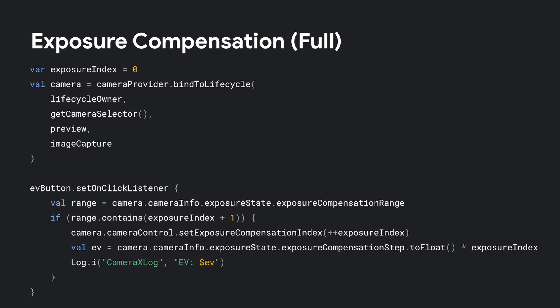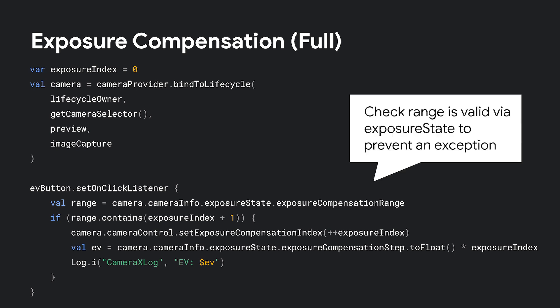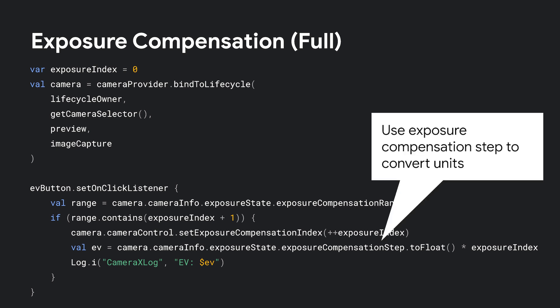There are a few other details to mention. First, we check our setting will be in a valid range by getting the exposure compensation range from the exposure state provided by camera info. This prevents a possible exception. Finally, if we'd like to obtain the EV value — say to display — we can get the exposure compensation step and use it to perform a conversion from an index to EV.